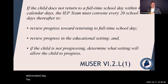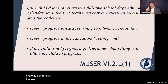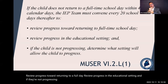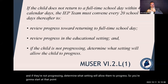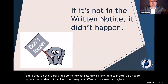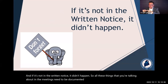If they're still on an abbreviated day after those 45 calendar days, the IEP team must meet every 20 school days, review progress toward returning to a full day, and review progress in the educational setting. If they're not progressing, determine what setting will allow them to progress — so at that point you're going to start talking about maybe a different placement. And if it's not in the written notice, it didn't happen, so all these things that you're talking about in the meetings need to be documented in the written notice.